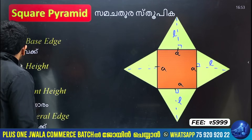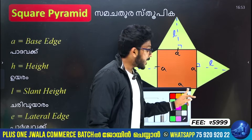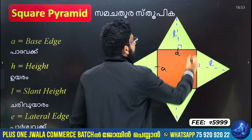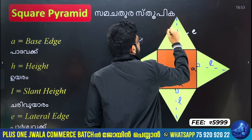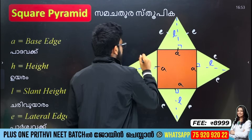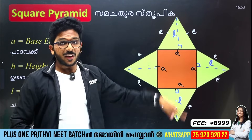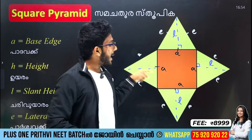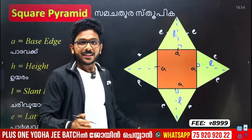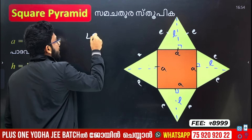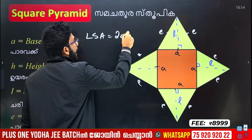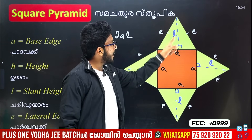Now, the lateral edge — if you think L is lateral edge, that is not correct. Lateral edge is E. This is lateral edge on each side. There are 4 lateral edges which are triangular. If you want to add the 4 parts, I will add LSA. The lateral surface area is 2AL — that is 2 × A × L.